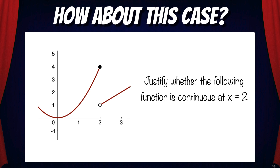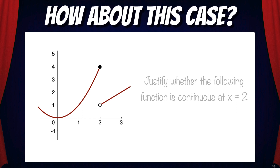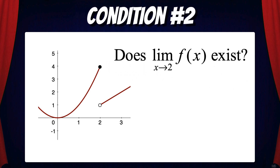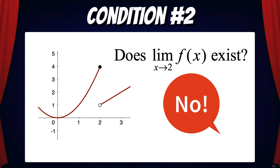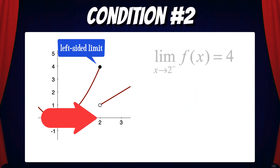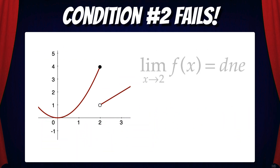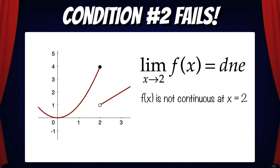Let's look at another case: justify whether this function is continuous at x equals 2. It may seem obvious that this function is not continuous, but we have to prove it using the conditions of continuity. Condition 1: does f(2) exist? Yes it does. Condition 2: does the limit of f(x) as x approaches 2 exist? No — the left and right-hand limits aren't the same. As x approaches 2 from the left, the limit is 4; from the right, the limit is 1. Since the left and right limits don't match, the limit doesn't exist. We don't even need to check condition 3 — we already have enough information to prove that this function is not continuous.